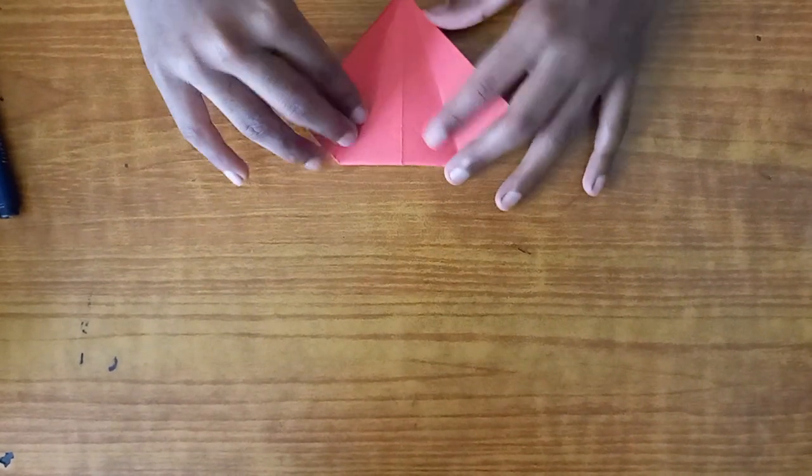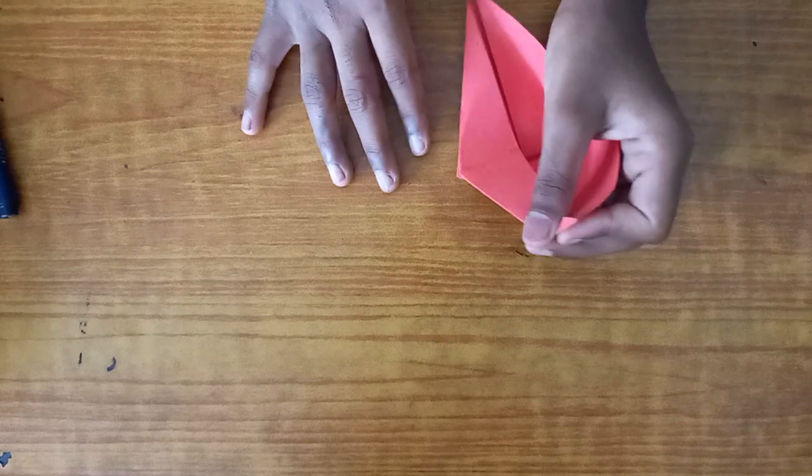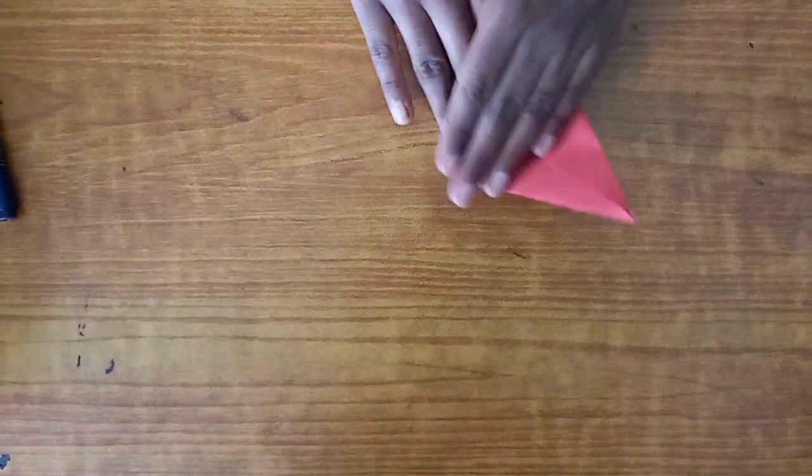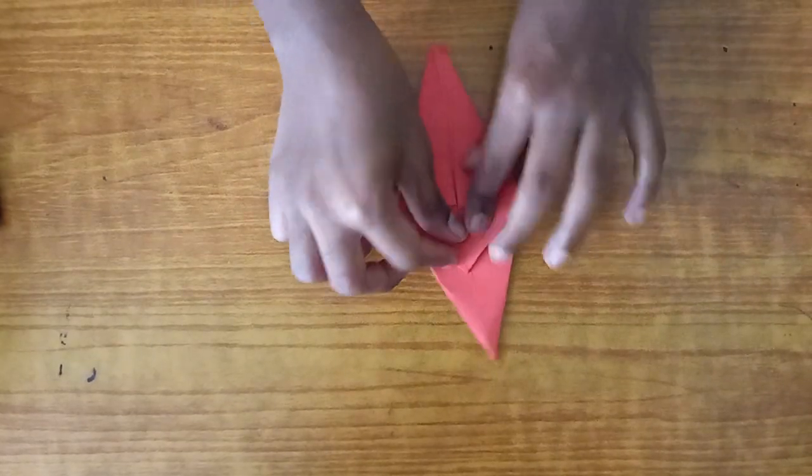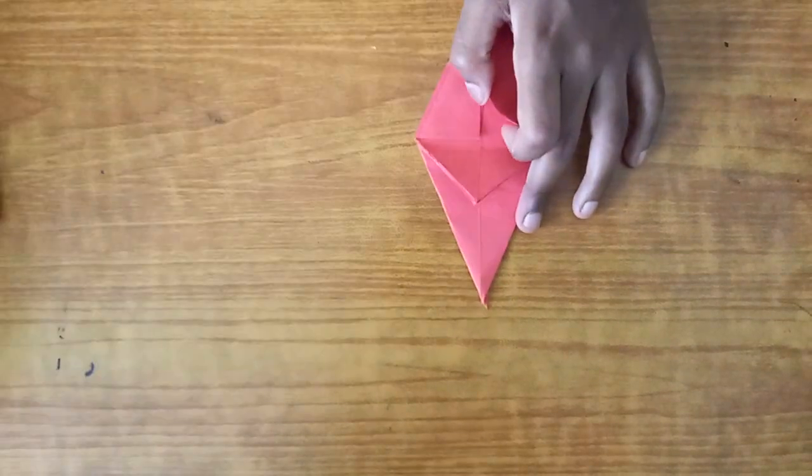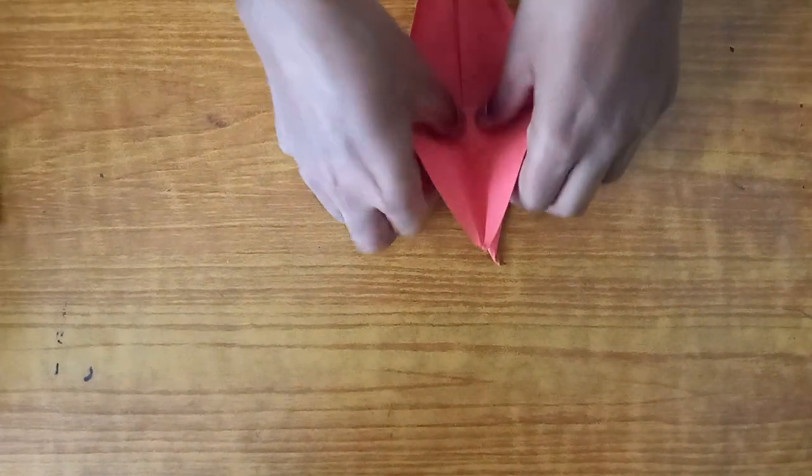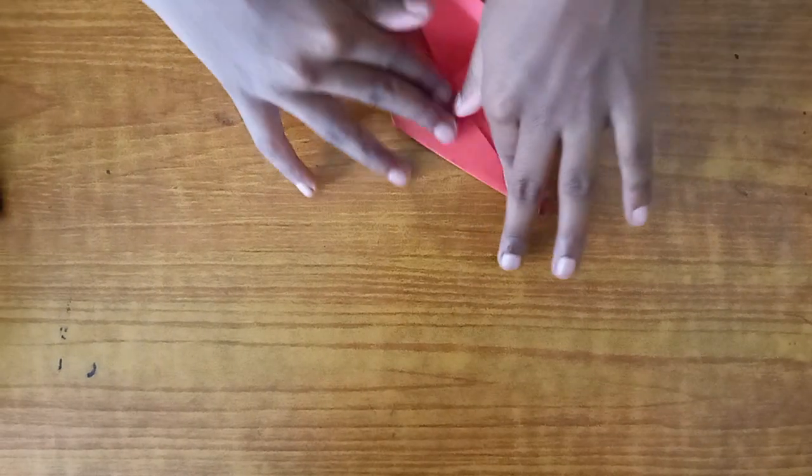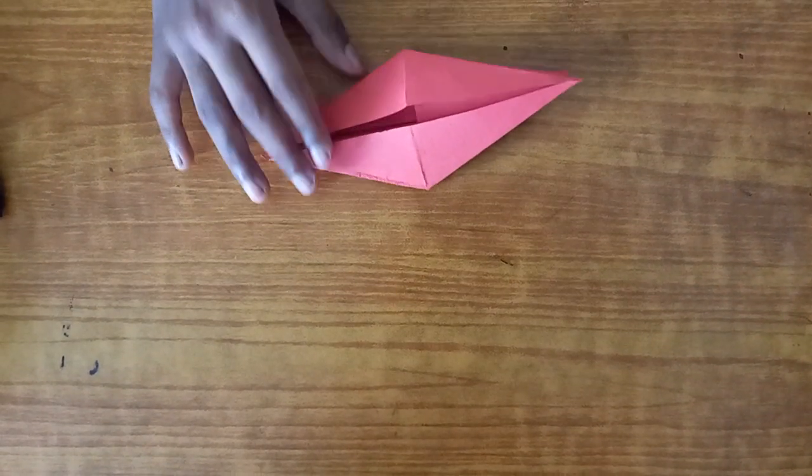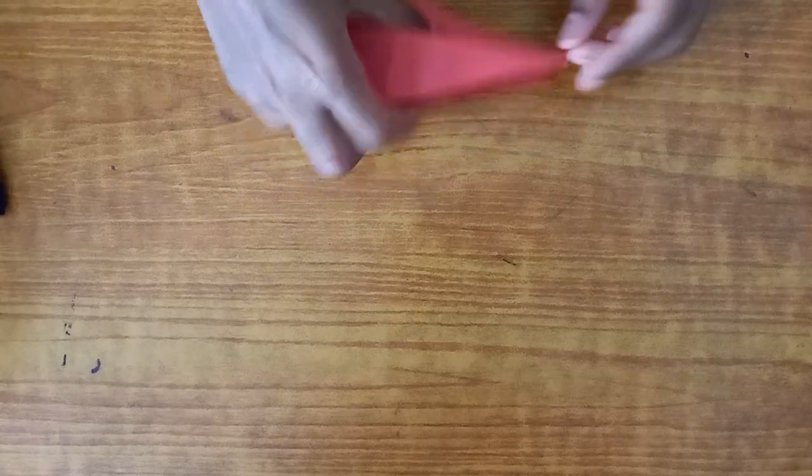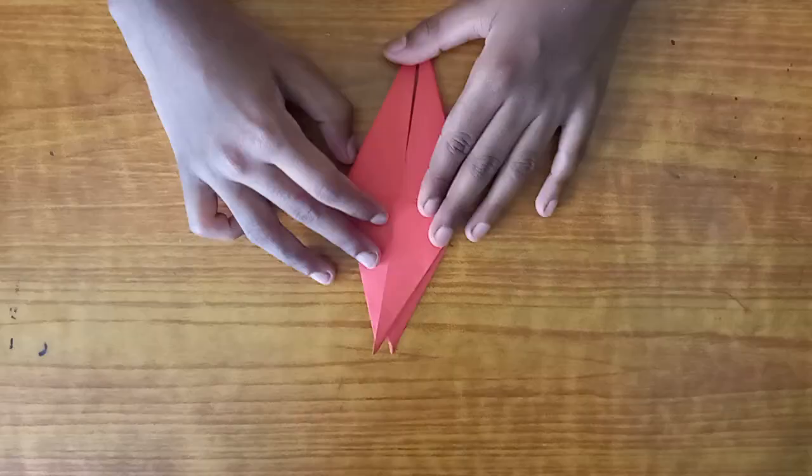Now open this part up, and you're gonna do the same thing like you did with the origami crane. Fold it like so. Now repeat it on this side, but make sure this triangle pops up. Lift it up, open it, hold the crease, fold it up, and then squash it. Try to make it as perfect as possible.